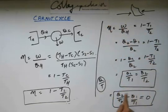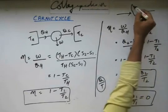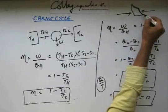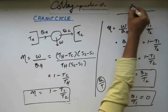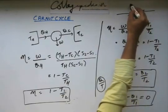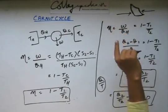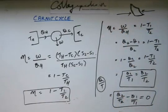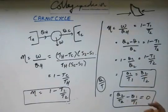In a cyclic process, if you are looking for Q by T of each step, you calculate Q by T for each step and add them all, returning to the same position you started with. So when you complete that cycle, the sum of all Q by T considering sign will be zero.